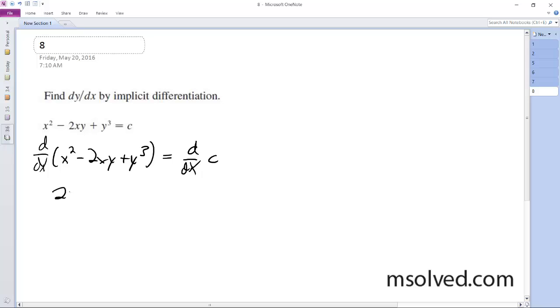So we have 2x minus 2y plus 2xy prime plus 3y squared y prime is equal to zero. Then 2xy prime plus 3y squared y prime equals 2y minus 2x.